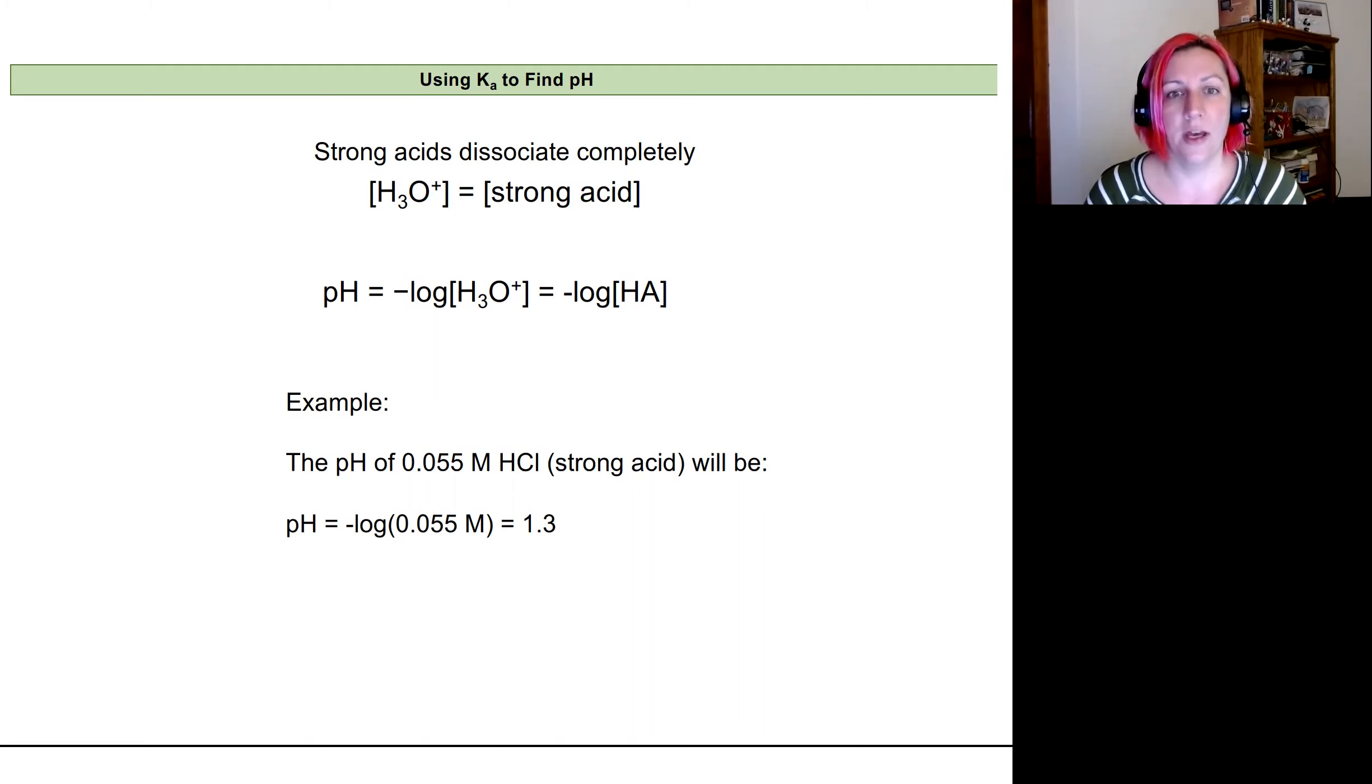And so the pH is going to track hydronium ion concentration, and the Ka is going to track the equilibrium constant and show how much products or reactants are favored, which tells us the strength of the acid.